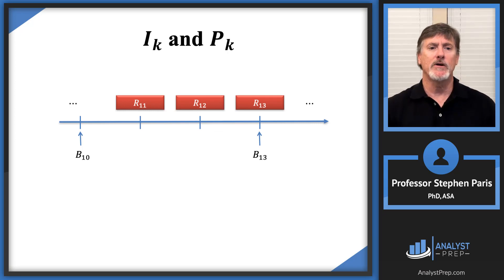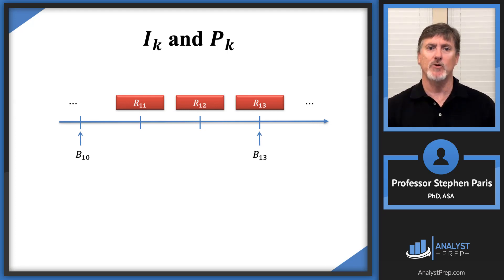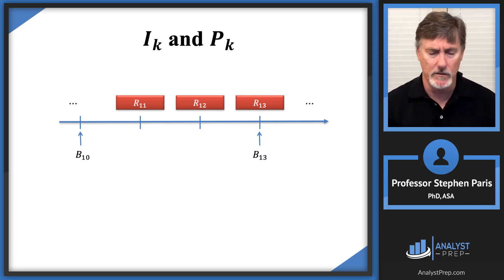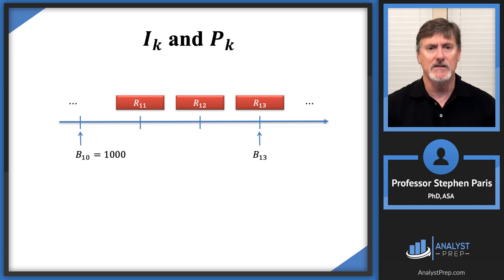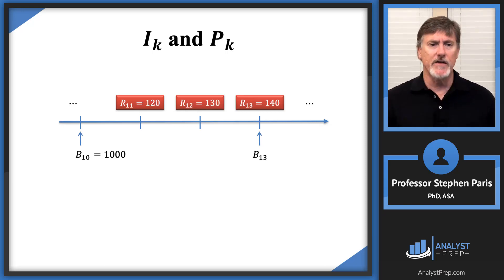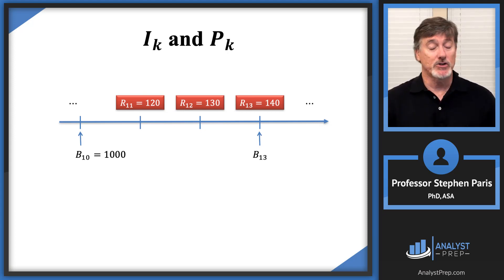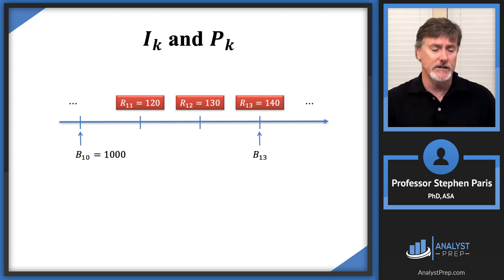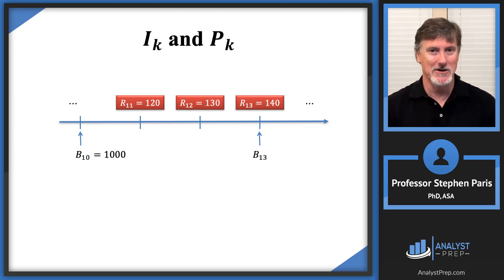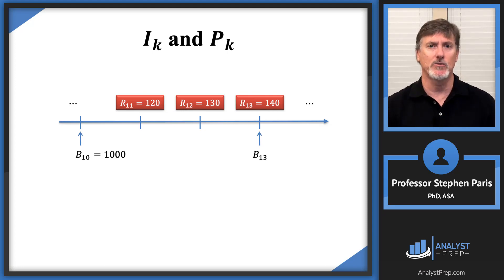Let's say I'm looking over three periods from time 10 to time 13. There's a payment at time 11, a payment at time 12, and a payment at time 13 — that's what's shown symbolically in red. Now let's put some numbers to these things. The balance at time 10 is 1000, and let's say the payments are 120, 130, and 140. Don't get caught up in the numbers — I'm making them up. I want you to look at the relationships between the symbols.